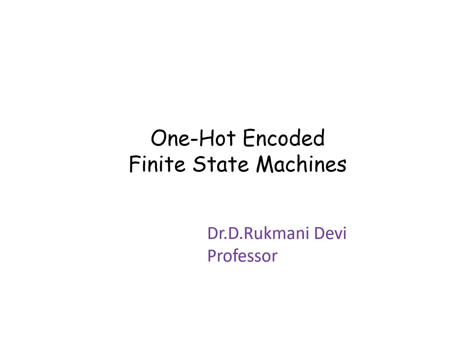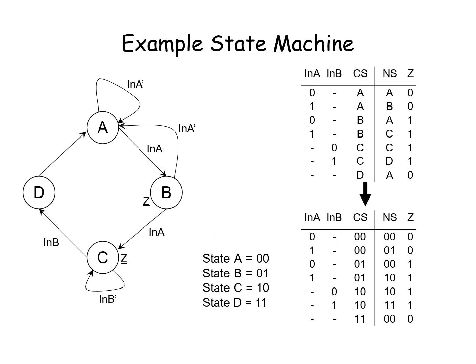Good afternoon students. This is a one-hot encoded finite state machine. The slide shows that there are four states present: A, B, C, D. In general, each state can be defined as two bits because four states are present. Two to the power of two, you will get four states.